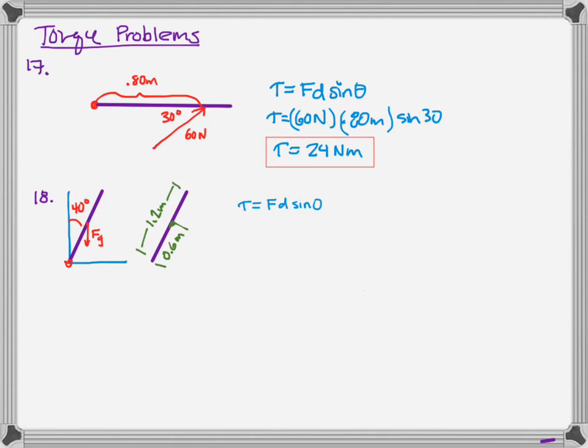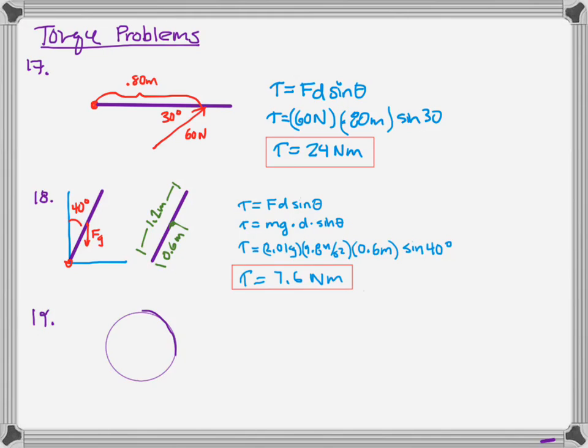That gives us our lever arm. Torque is F·D·sin(θ) again. The force is mg, the lever arm is that distance to the center of mass where gravity is acting, 0.6 meters, and the angle is 40 degrees. So mg times the lever arm times sine of 40 degrees. Crank that up and you find torque is 7.6 newton meters.